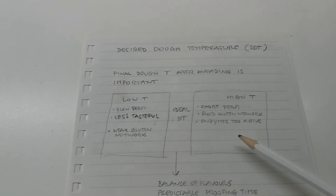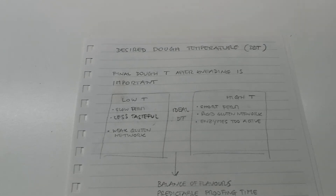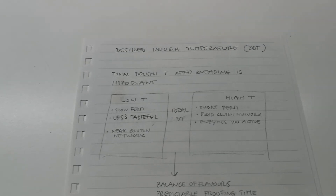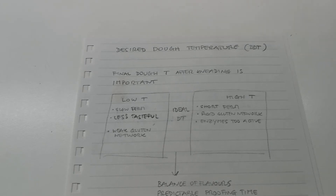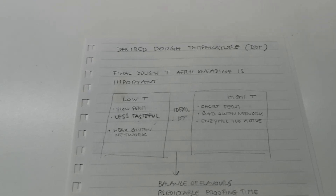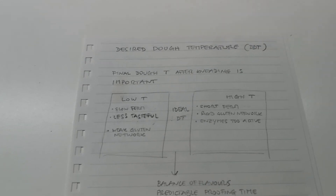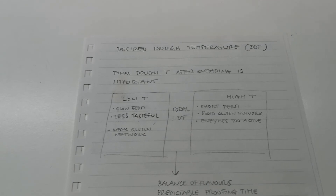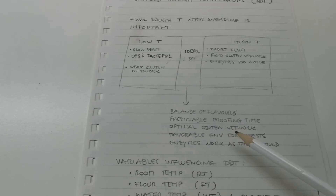A high temperature brings a very short fermentation, so it doesn't leave time to properly develop the bacteria in the dough — those bacteria that give the final product the right flavor and acidity. It also brings a rigid gluten network that is prone to breaking. Anyone who has kneaded a dough with a very high final temperature knows the dough is very delicate and tends to break very easily. The enzymes are too active, which tends to liquefy the dough, making it very difficult to build good tension.